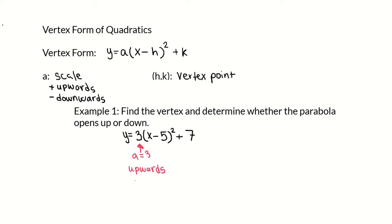So if we were to graph it, it would look somewhat like a upward-opening parabola. The a value tells us the graph opens upwards. The vertex point is h comma k, where h is the value subtracted from x and k is the value added or subtracted at the end. So the vertex for this function is (5, 7).